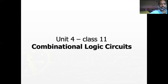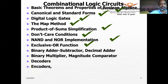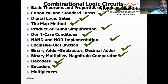We have been studying how we combine different gates to form logic circuits. So far we have seen the binary adder and subtractor, the decimal adder, the binary multiplier, magnitude comparator, and also decoders and encoders. In this session we will look into what are called multiplexers.